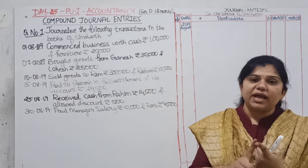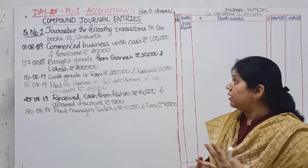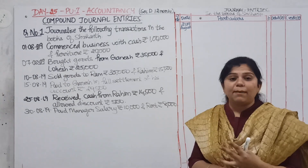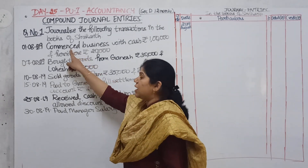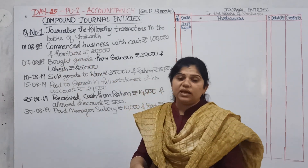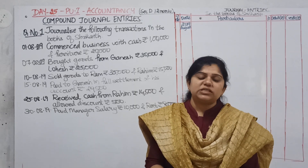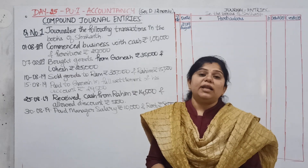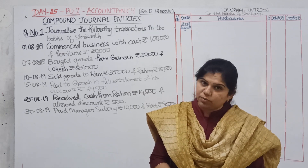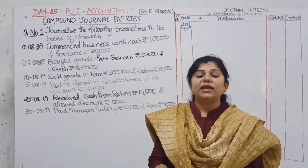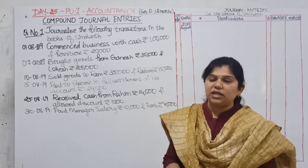Commence the business with cash rupees 1 lakh and furniture rupees 20,000. So totally 3 accounts will come: cash account, furniture account, and capital account. Whenever the word 'commenced,' 'started,' 'begin,' or 'incorporated' comes, it means a new business is started. So capital account will always have a credit balance only.